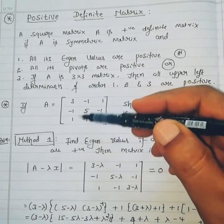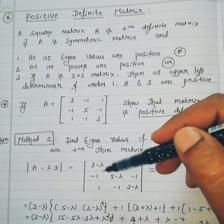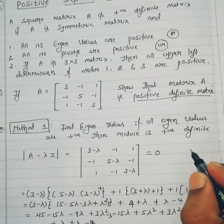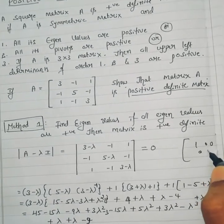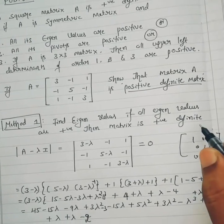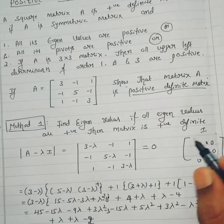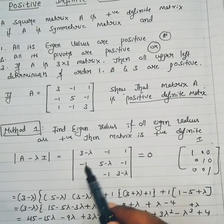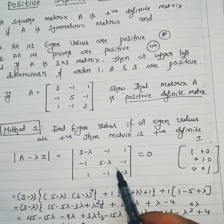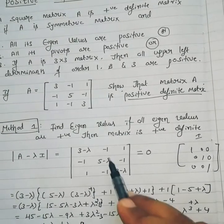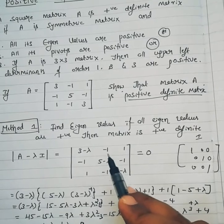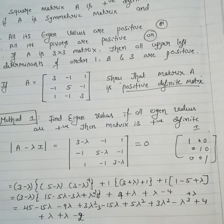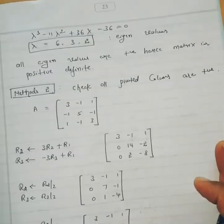I is the identity matrix; for a 3×3 matrix we write the 3×3 identity. When we compute A minus lambda I, the diagonal elements have lambda subtracted from them. Then we expand the determinant: 3 minus lambda, then 5 minus lambda into 3 minus lambda, minus, minus into minus becomes minus 1. The second term is minus, so minus with minus gives plus. At the end you will get this result.